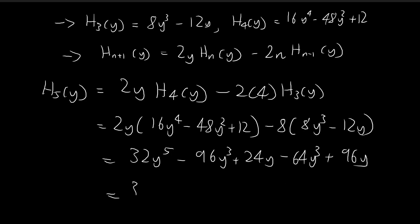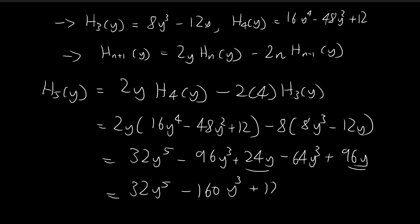Combining these terms: we have the y to the power of 5 term, then we combine the y to the power of 3 terms, which gives negative 160y to the power of 3, and combining the y terms gives plus 120y. So h5 of y equals 32y to the power of 5 minus 160y to the power of 3 plus 120y.